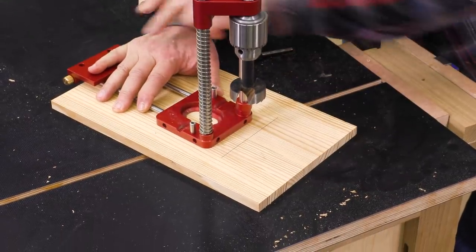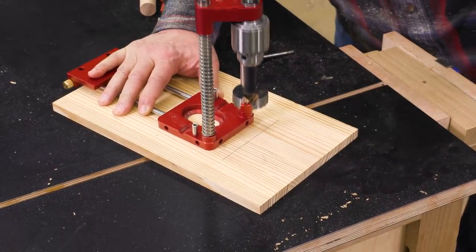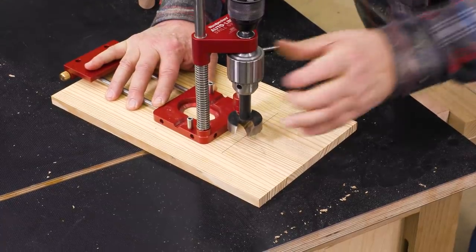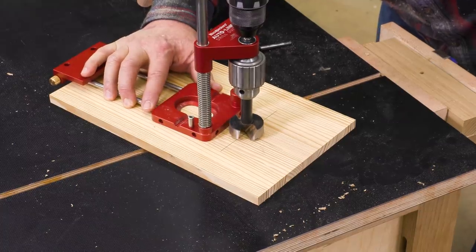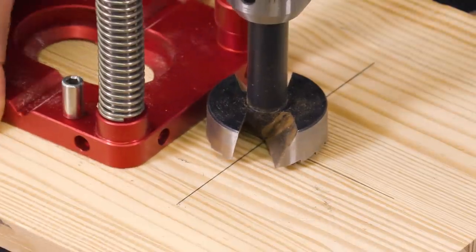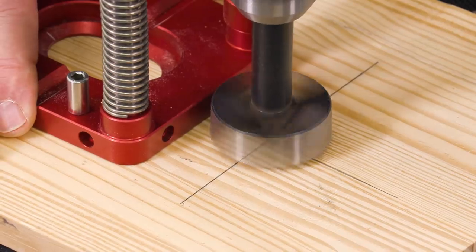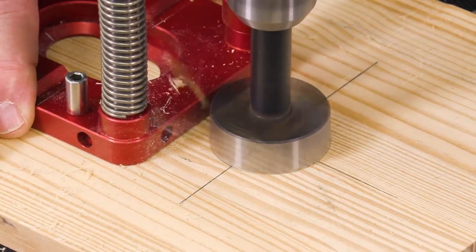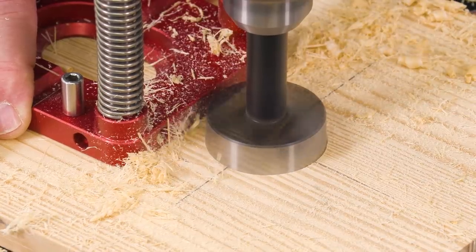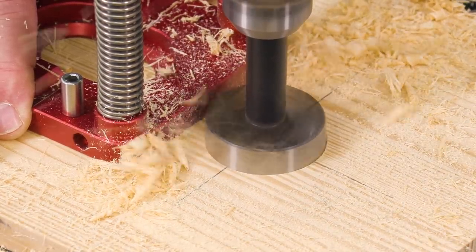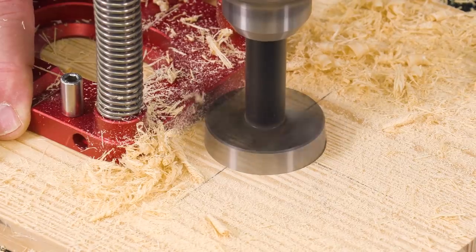Now, with our outrigger in place to help us get it located, I'm going to bring my Forstner bit down, locate it right on my center line, and we're ready to drill.